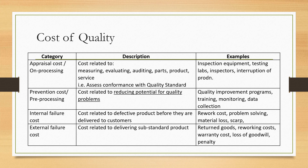Cost of quality has four categories: Appraisal cost (or processing cost) is the cost related to measuring, evaluating, and auditing parts, products, and services to ensure conformance with quality standards — examples include inspection equipment, testing labs, and inspectors. Prevention cost is the cost related to reducing the potential for quality problems — examples include quality improvement programs, training, monitoring, and data collection. Internal failure cost is the cost related to defective products before delivery to the customer — examples include rework, problem solving, material loss, and scrap. External failure cost is the cost of delivering substandard products — examples include returned goods, reworking cost, warranty cost, loss of goodwill, and penalties.